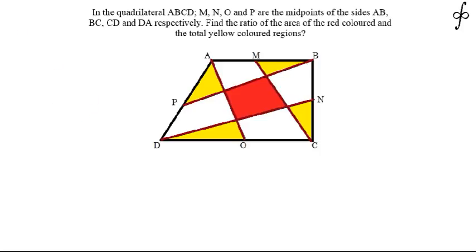Let us discuss this geometrical problem. In the quadrilateral ABCD, M is the midpoint of AB, N is the midpoint of BC, O is the midpoint of CD, and P is the midpoint of AD. So AP equals PD, AM equals MB, BN equals NC, and CO equals OD.